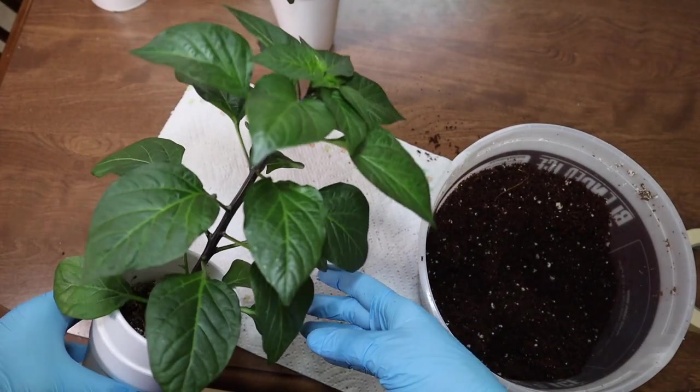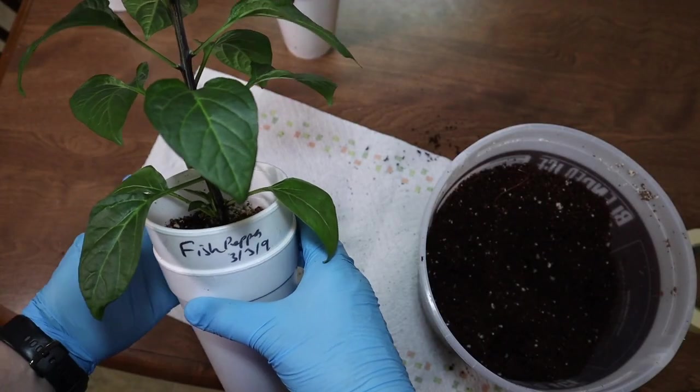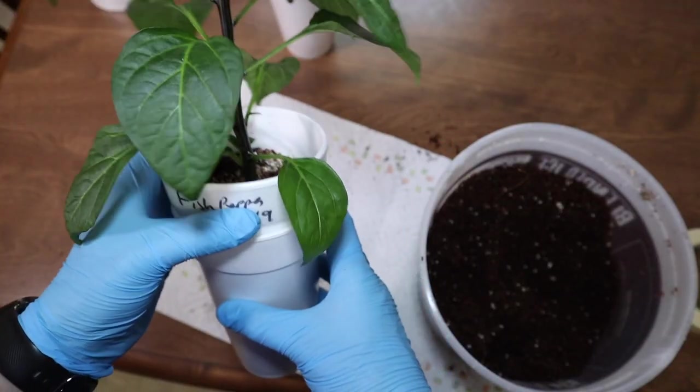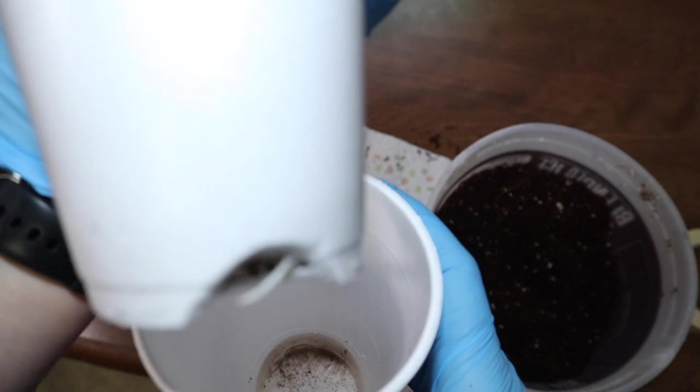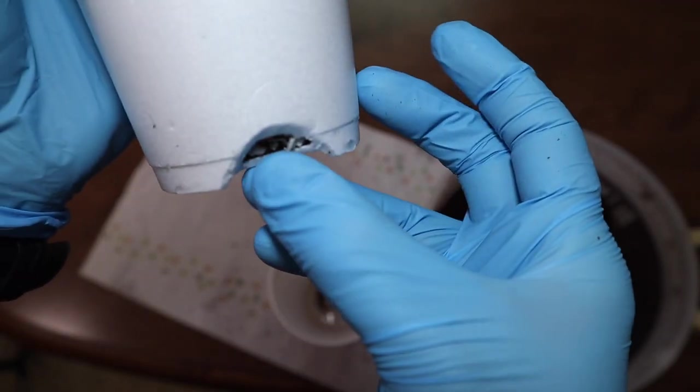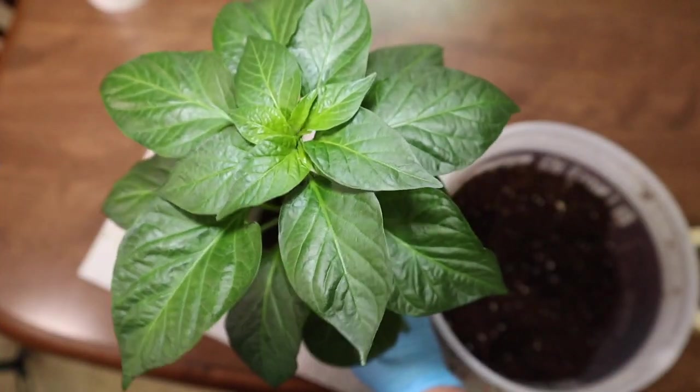This is a fish pepper that I did on 3-3 so about less than two weeks ago. And it was a lot smaller than this when I transplanted it. But it's doing well and you can see where the roots are starting to come out. Just starting to poke through the bottom there. It won't be long before they start growing out more.